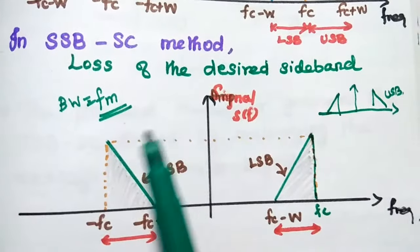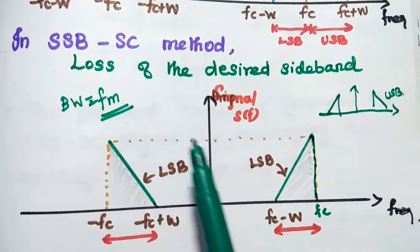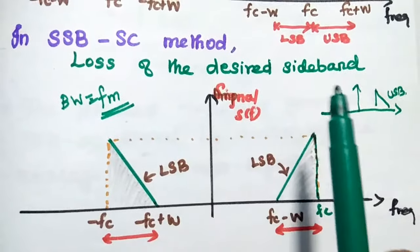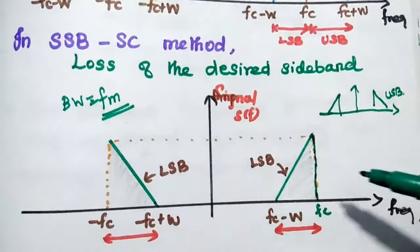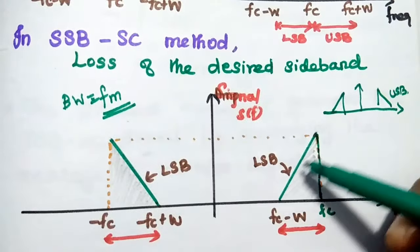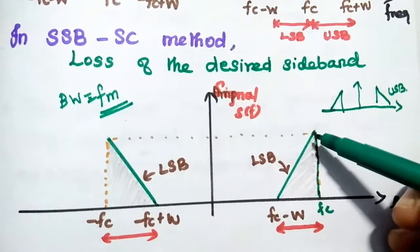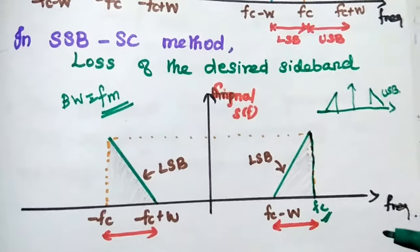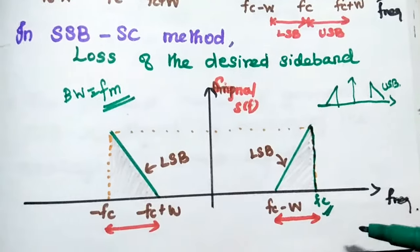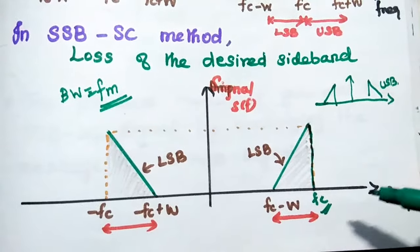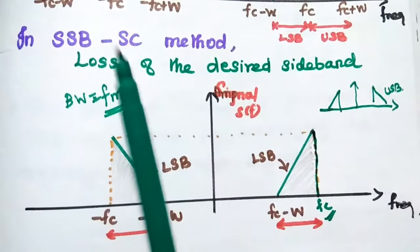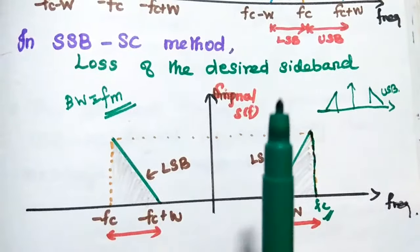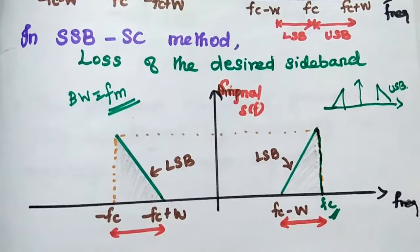Even though the single sideband method reduces the bandwidth requirement, it is relatively difficult to generate the desired signal because there is no ideal filter to filter a single sideband. In the diagram, we can see the sharp cutoff at the carrier frequency, but in practice there is no filter having a sharp cutoff frequency. That is the major issue. The major drawback of single sideband is loss of the desired sideband. In order to overcome this problem, we move on to the Vestigial Sideband Modulation System.